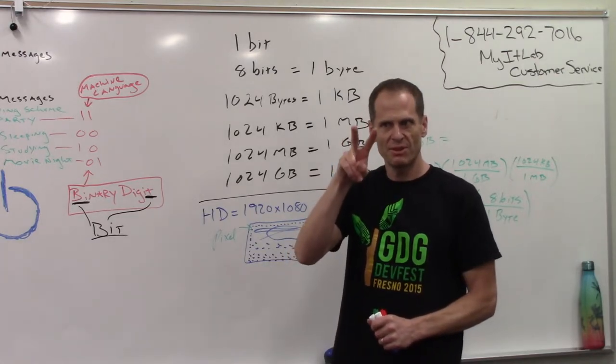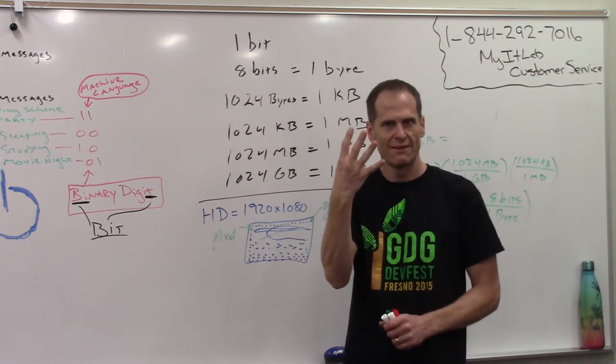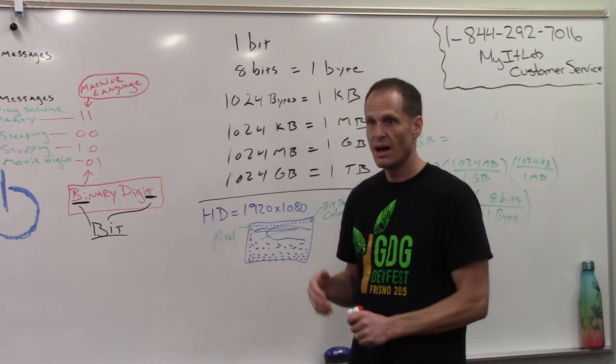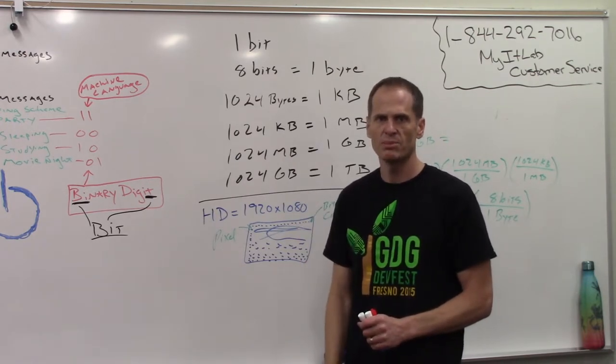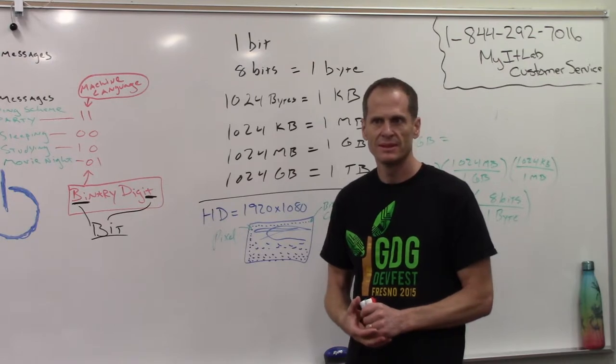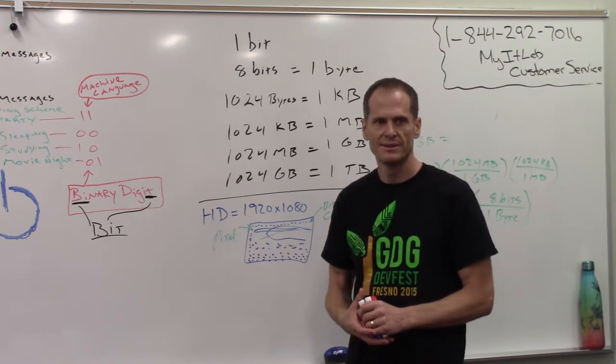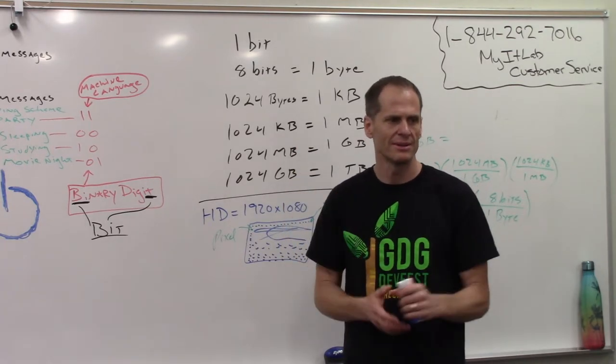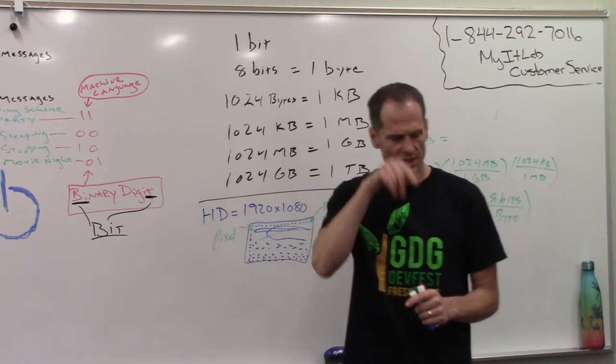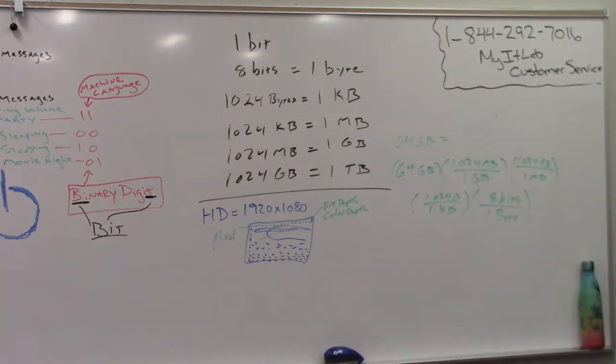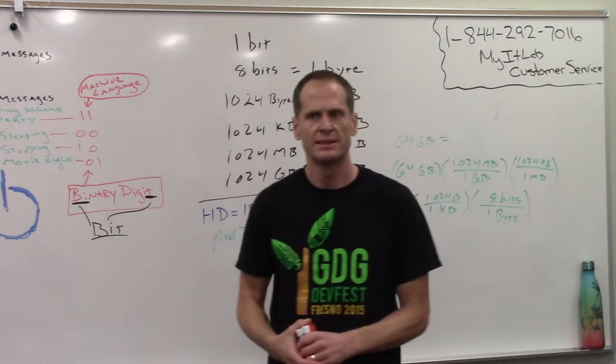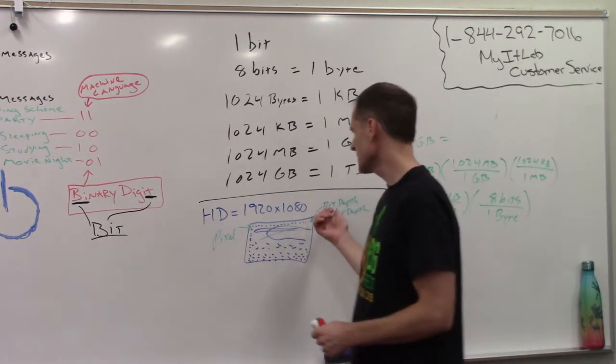If we have a bit depth, color depth of two, how many possible colors can we store for each pixel? Four. If we have a bit depth, color depth of 16, how many possible colors can we store? Give me the formula. Two to the power of 16. Just launch a new tab and do two shift six and then 16. It's 65,536 possible colors if we're storing 16 bits for each pixel.